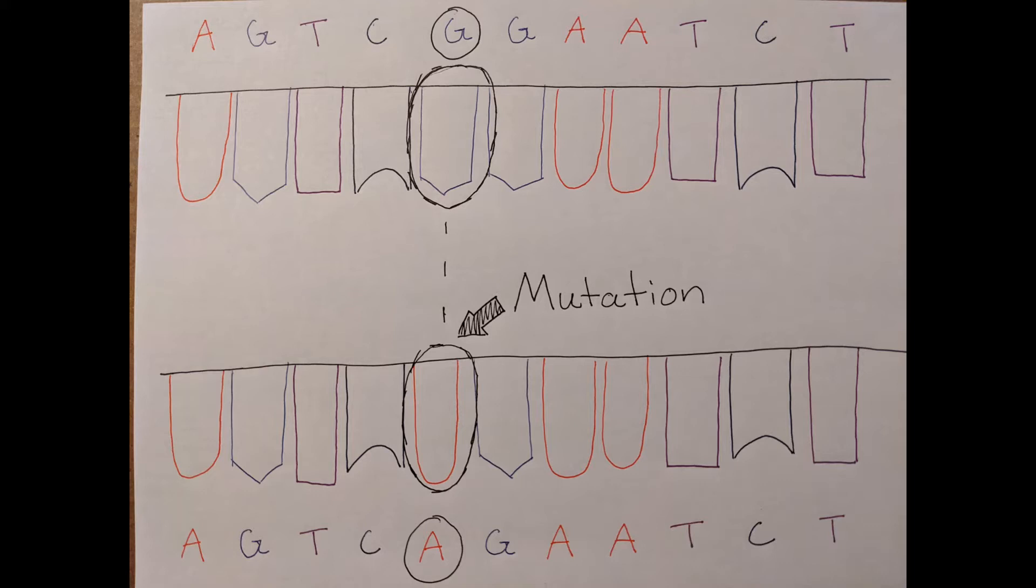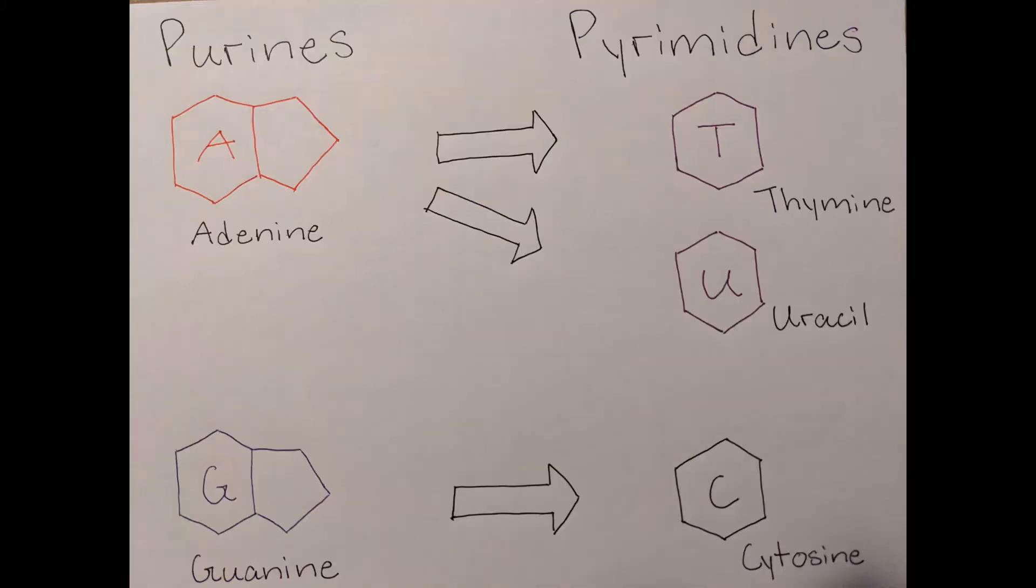A point mutation is when a single base pair is altered, meaning a base was exchanged for another. The bases of a gene are divided into two groups, purines and pyrimidines.